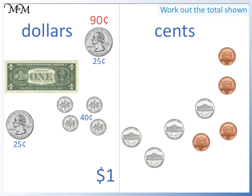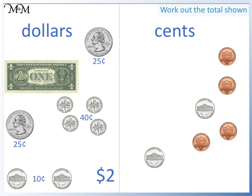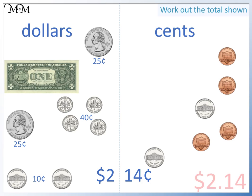And finally, we have two nickels, each worth five cents, giving us another ten cents. This takes us up to a total of one hundred cents, which is another dollar. So we now have two dollars. Looking at the cents again, we have two nickels, which is ten cents, and four one-cent coins, which make four cents. Altogether, we have fourteen cents. So we have two dollars and fourteen cents, which we write as two dollars fourteen.